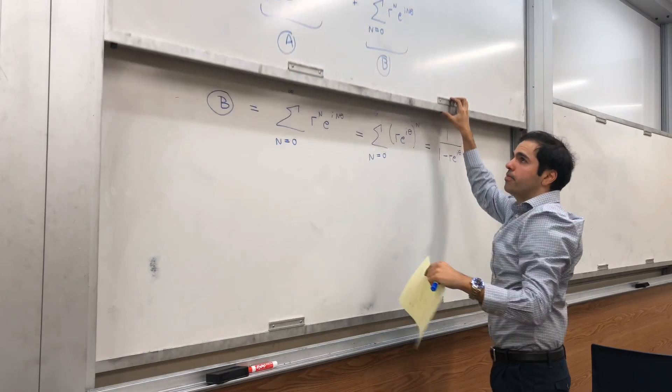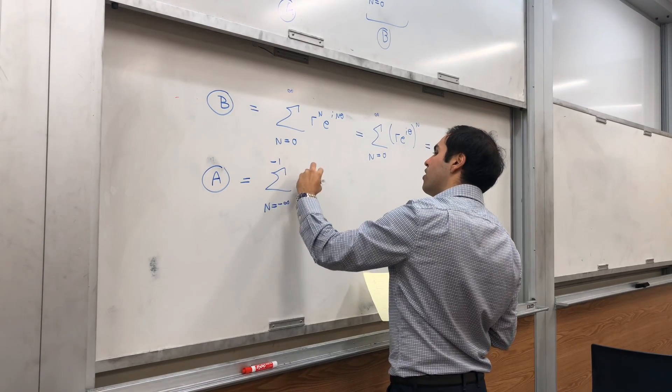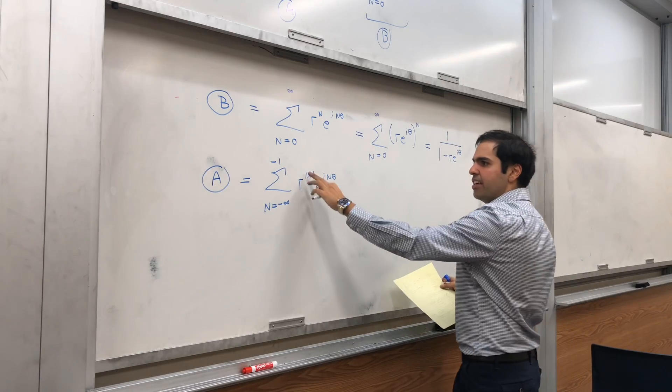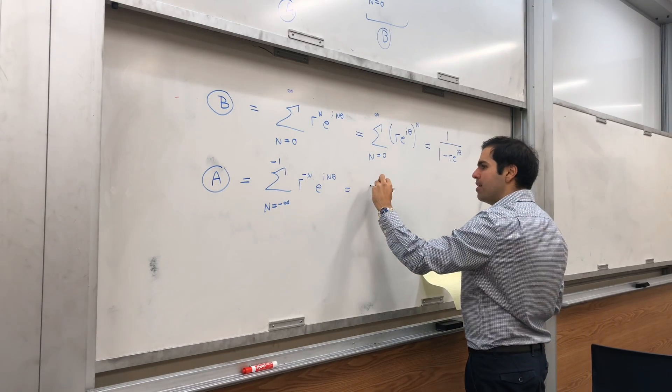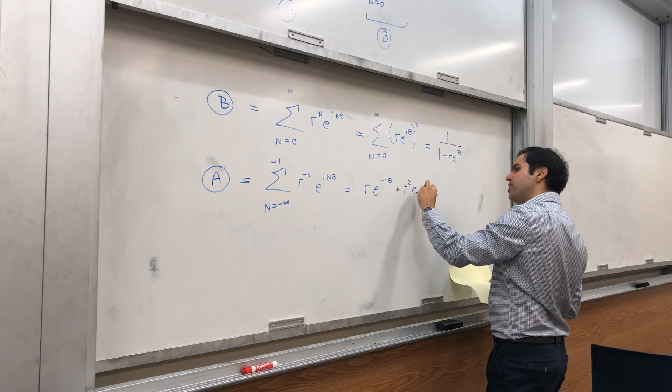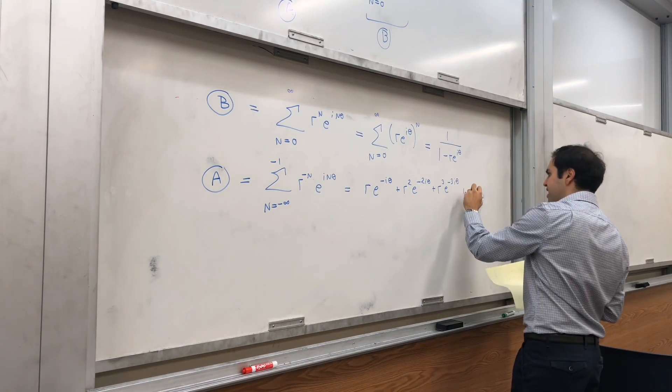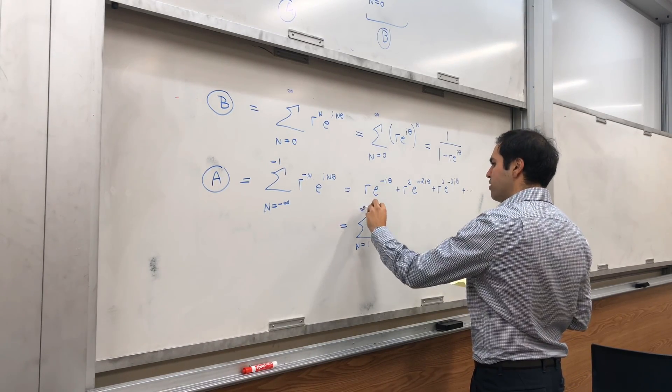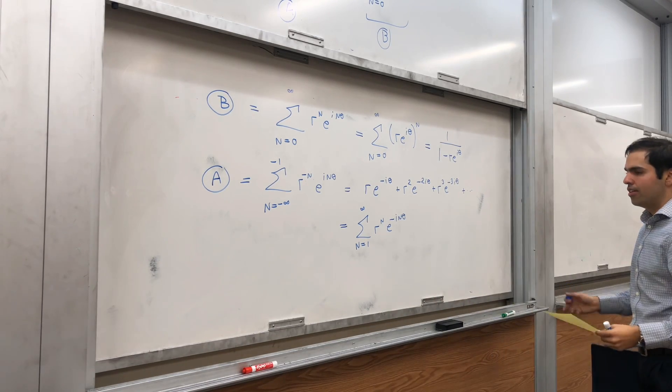It's simply the sum from n from minus infinity to minus 1 of r^|n| e^(inθ). But if n is negative, this absolute value of n is just minus n, and if you like, assuming we can rearrange the sum, this becomes re^(-iθ) + r²e^(-2iθ) + r³e^(-3iθ), et cetera. But notice, you can just write this as the sum from n from 1 to infinity of r^n e^(-inθ).